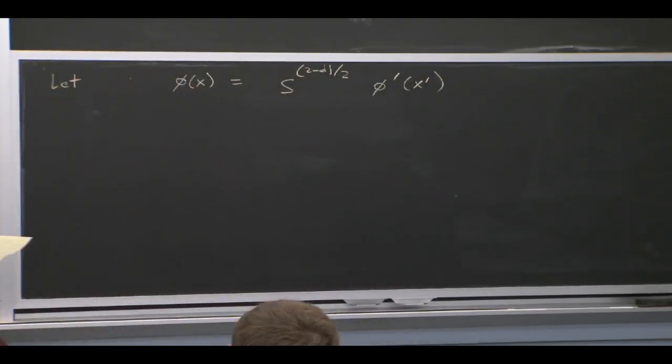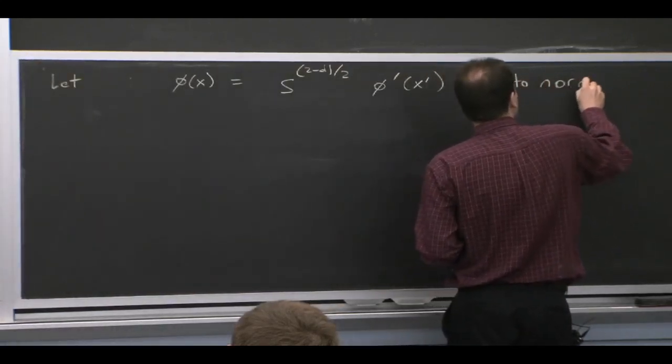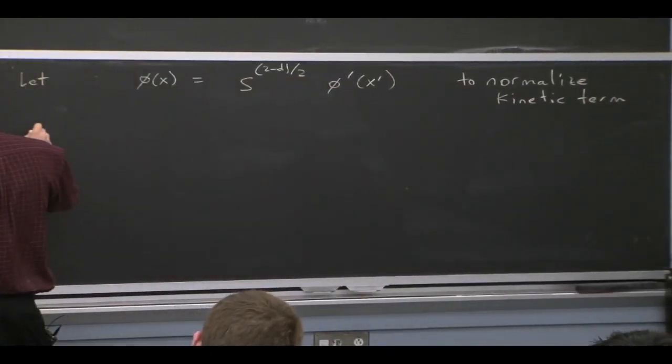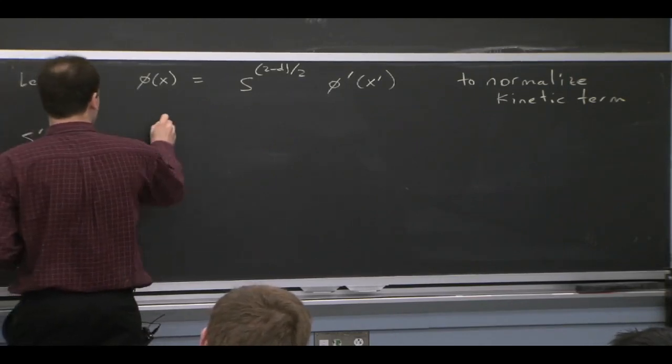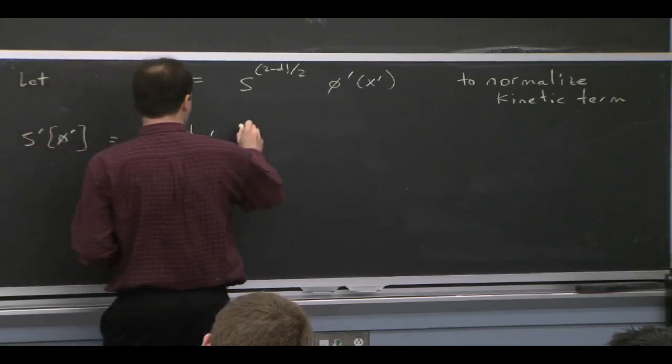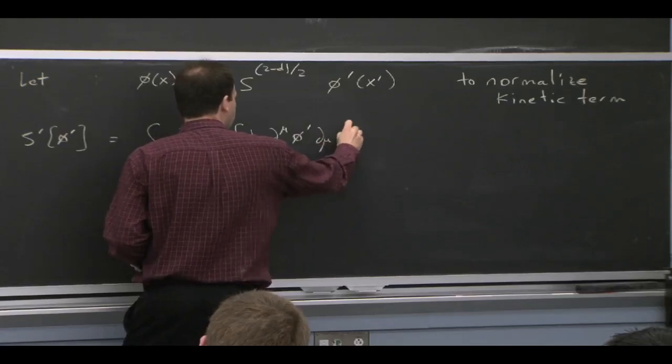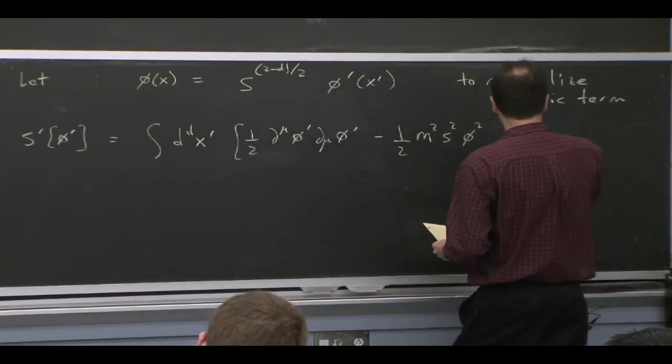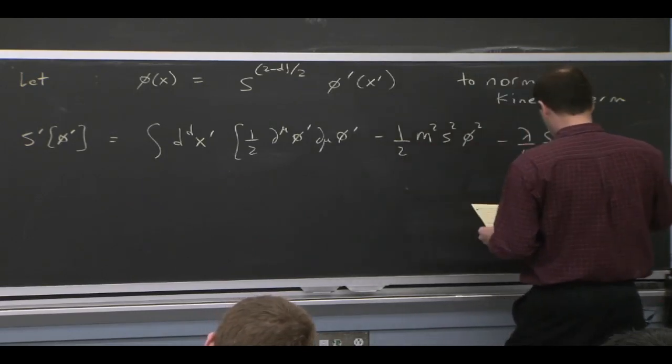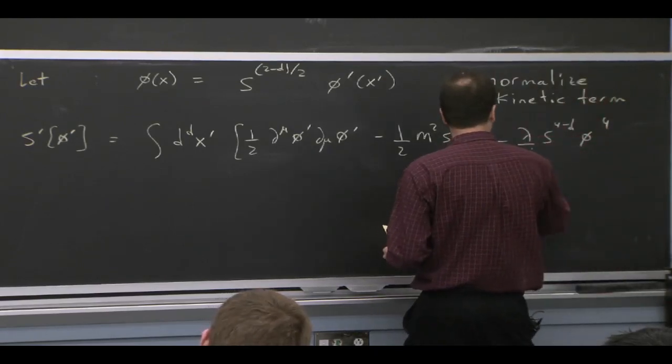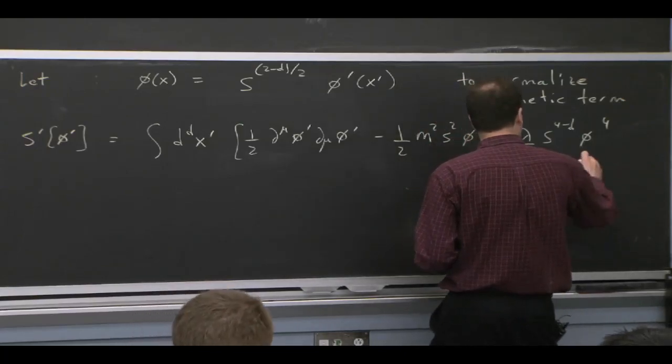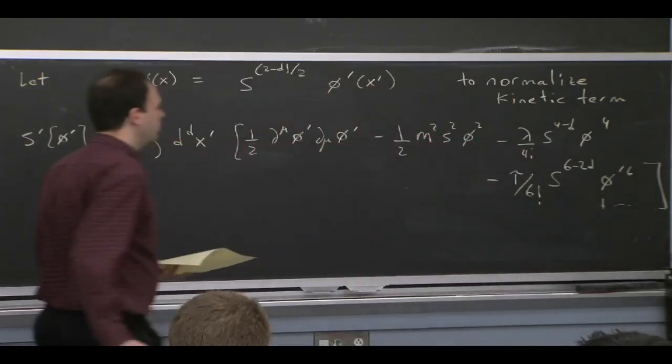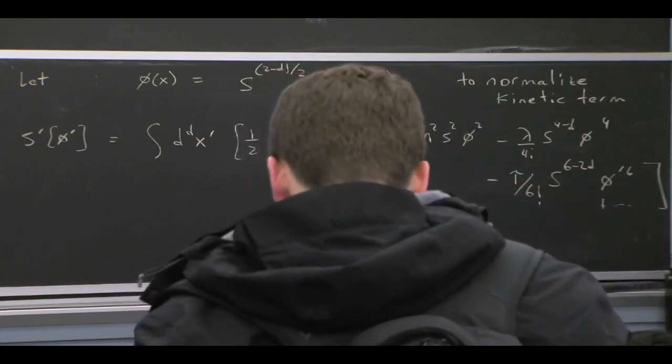And the way to do that is to do the following: to define a new field phi prime that's equal to the old field but rescaled by an s. And the outcome of that is that we get an action for the phi prime field written in terms of prime coordinates, which has a kinetic term. It's the same form. But then s's start showing up in the other places. And if you look at the powers of the s's that are showing up, it's related also to the powers of these parameters.